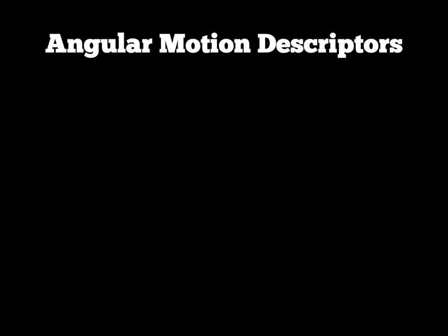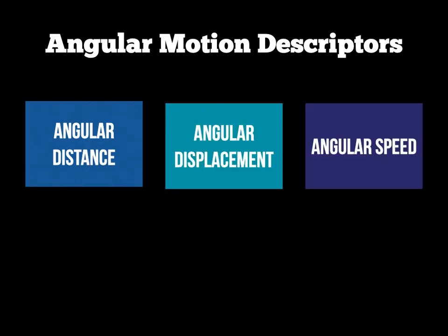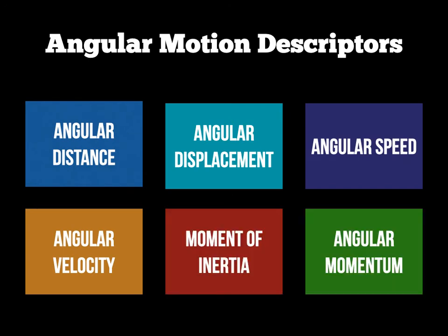Just as with linear motion, we also need angular motion descriptors. Angular motion essentially uses the word 'angular' in front of many of the same ones as linear motion, so they're quite similar. We have six descriptors for angular motion: angular distance, angular displacement, angular speed, angular velocity, moment of inertia, and angular momentum. I'll cover the first four in this screencast, and the next screencast will cover moment of inertia and angular momentum in more detail.